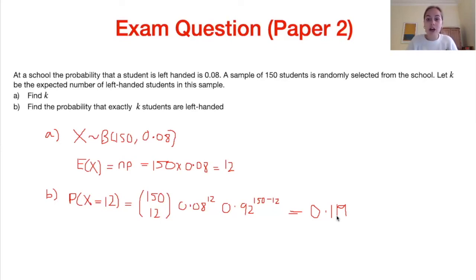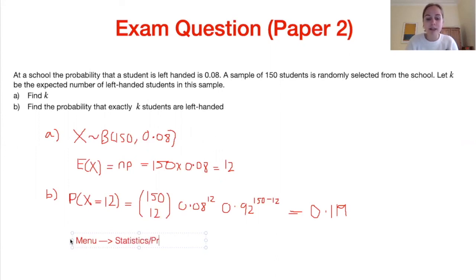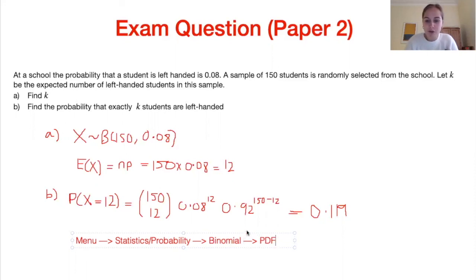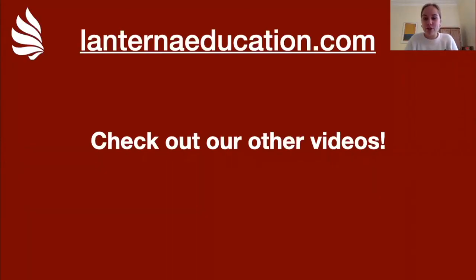We could have also worked that out using our GDC. Since everyone will have a different GDC, I'll outline the general steps: go to Menu, then into the Statistics sub-menu, and you'll likely be asked whether you want PDF or CDF. When finding the probability of one given outcome we use the PDF (probability density function). You'll then be asked to fill in the number of trials n and the number of successes x, which should give you the answer.